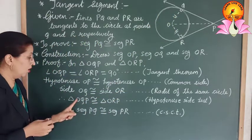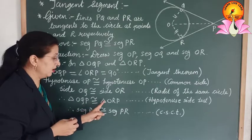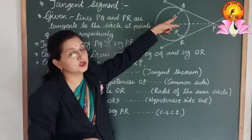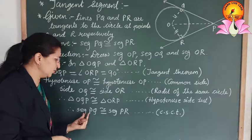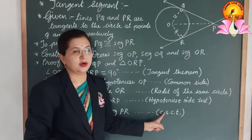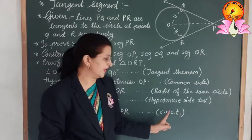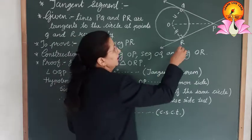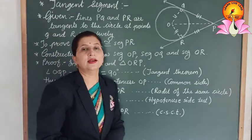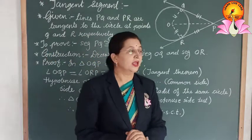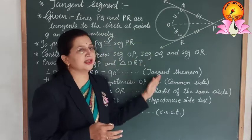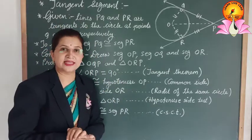Since these two triangles are congruent, their corresponding sides are also congruent — that is, segment PQ is congruent to segment PR — by the corresponding sides of congruent triangles. In this way, we have proved that the tangent segments drawn from an external point to a circle are congruent.